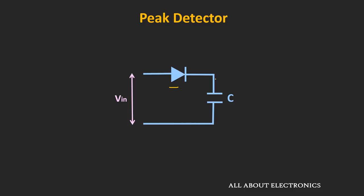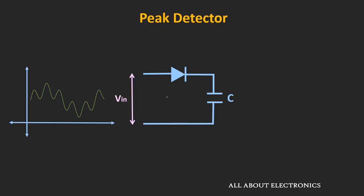Let's understand how this circuit can detect the peak value. Let's say some input signal is applied to this circuit, and let's assume that this diode over here is an ideal diode and there is no charge across this capacitor. As soon as some positive input is applied to this circuit, the diode will start conducting and the capacitor will get charged through this path, and it will get charged up to the peak value of the input signal.